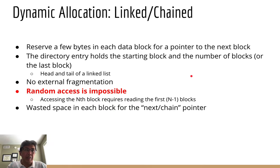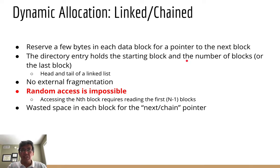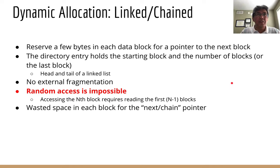After learning about contiguous allocation, the next two allocation algorithms will allocate files or directories non-contiguously. One benefit of non-contiguous allocation is that when your files or directories grow in size, you don't have to find a contiguous block — just find any free block and add it to your allocation. The first of the two non-contiguous algorithms is linked or chain allocation.